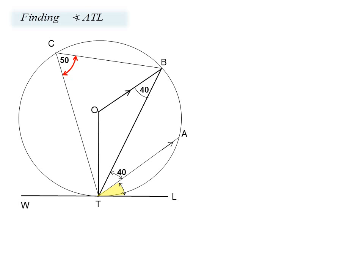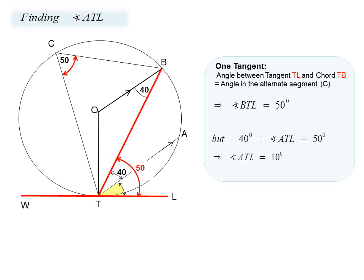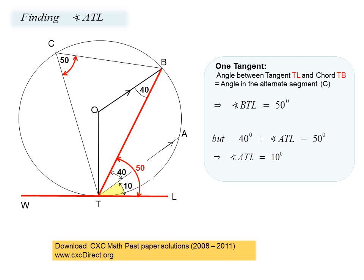Let us now find angle ATL, shown highlighted in yellow. We recognize that the angle between tangent TL and chord BT equals the angle in the alternate segment, which is angle C. Therefore angle BTL equals 50 degrees. We already know a portion of that angle as 40 degrees, so the remainder — ATL — is equal to 10 degrees. Please review lesson one, which is a smooth introduction to lesson two and should put you in good stead to solve any circle theorem problem in under five minutes.